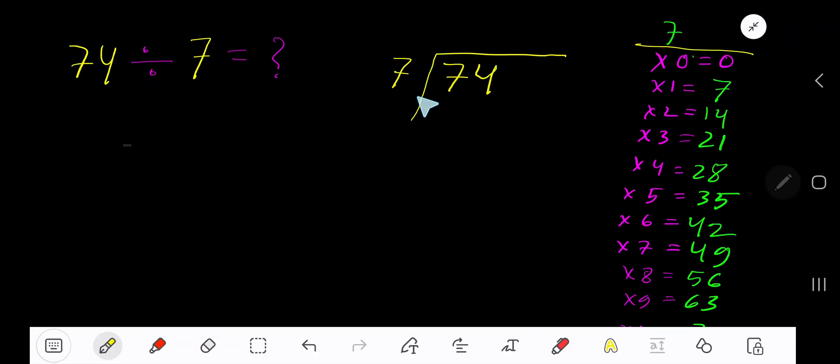74 divided by 7. Here 7 is a divisor, so we need the multiplication table of 7. 7 times 0 is 0, 7 times 1 is 7, 7 times 2 is 14, 7 times 3 is 21. To find the multiplication table of 7, just add 7 to the previous value: 0 plus 7 is 7, 7 plus 7 is 14, 14 plus 7 is 21.